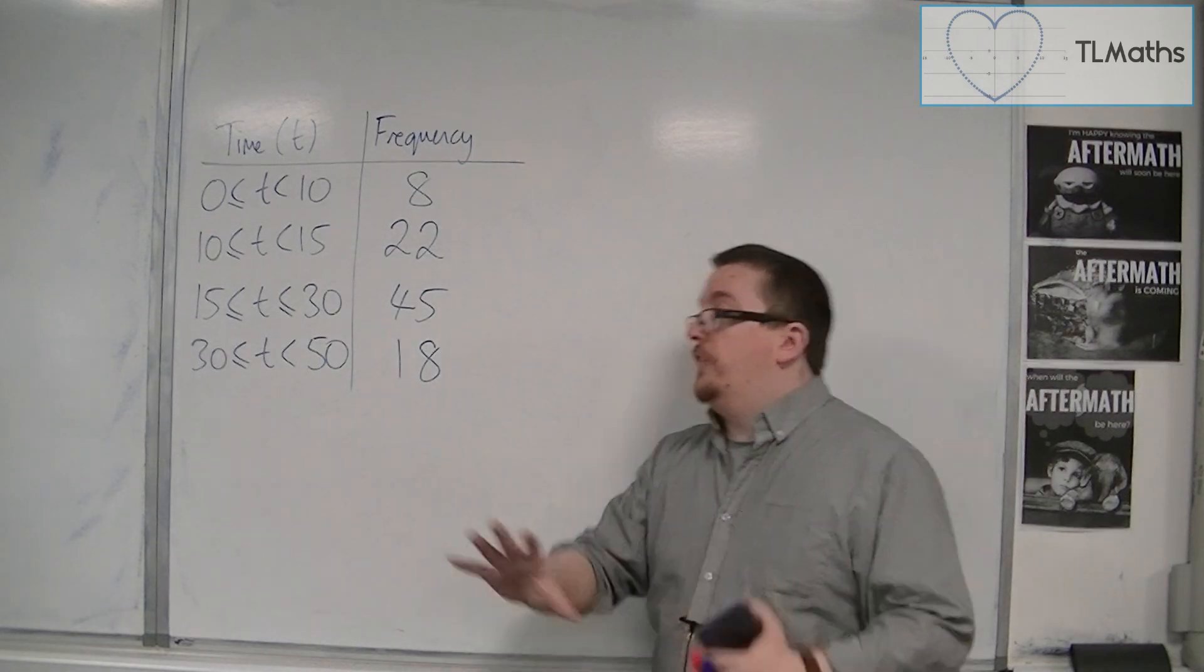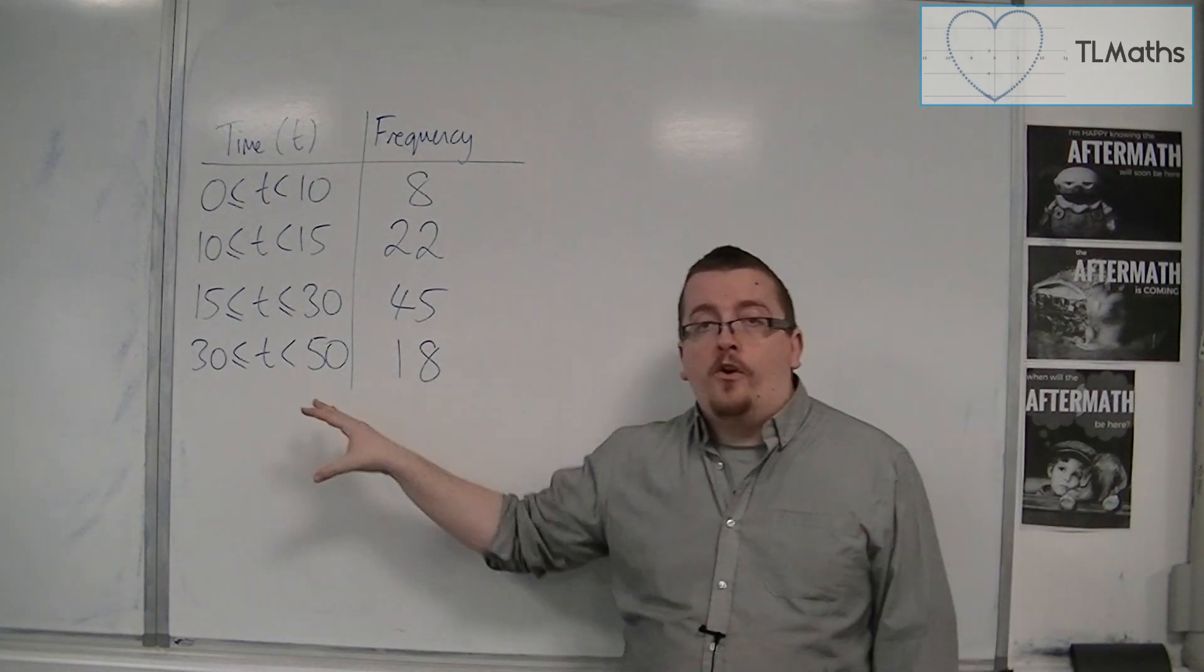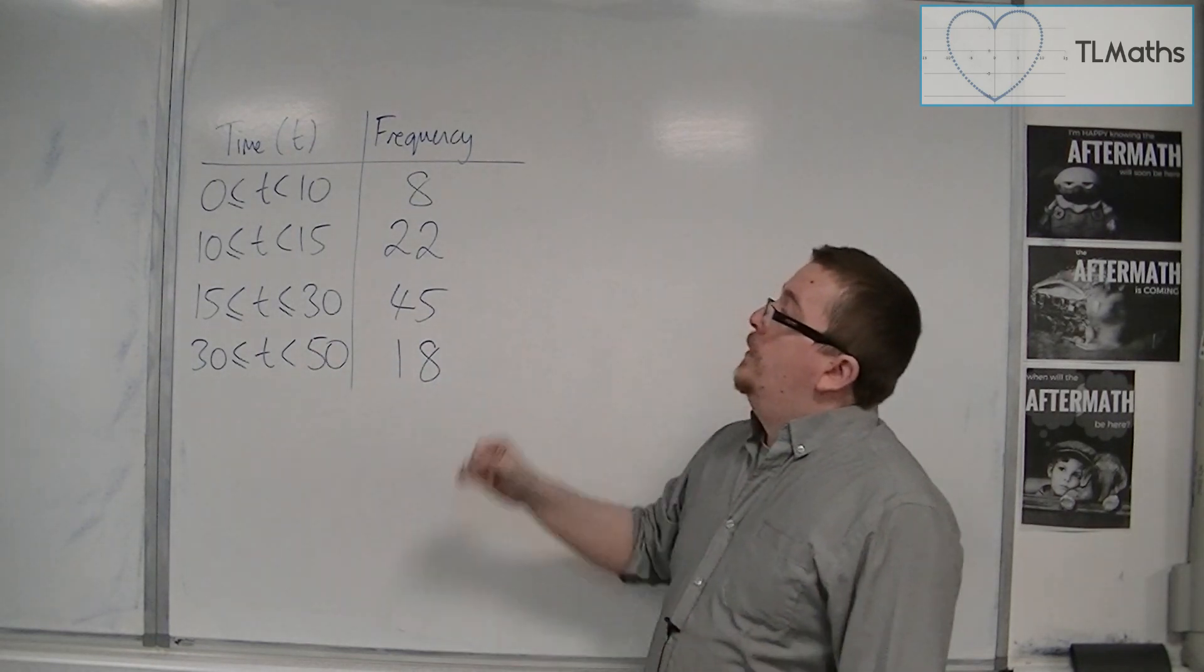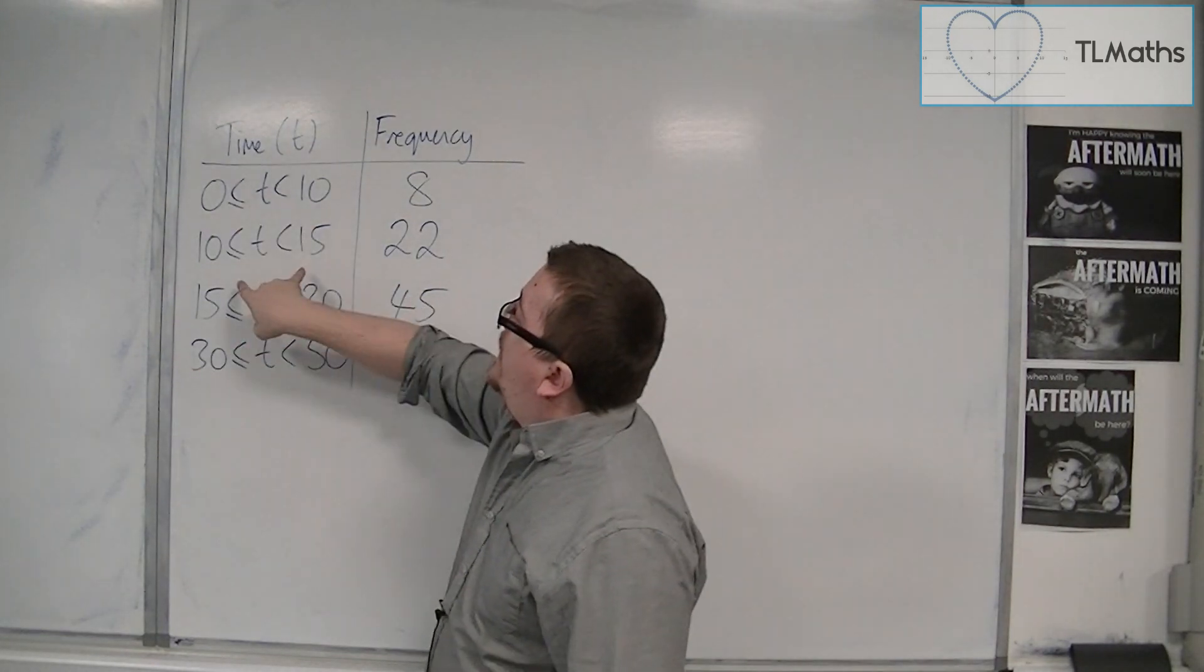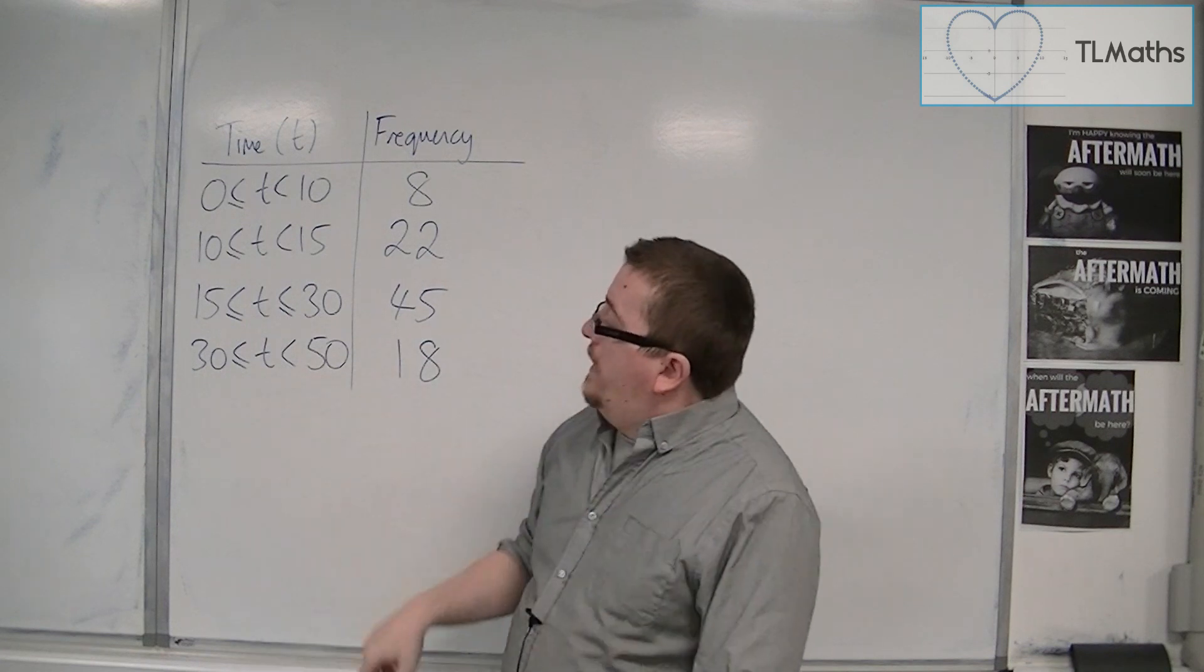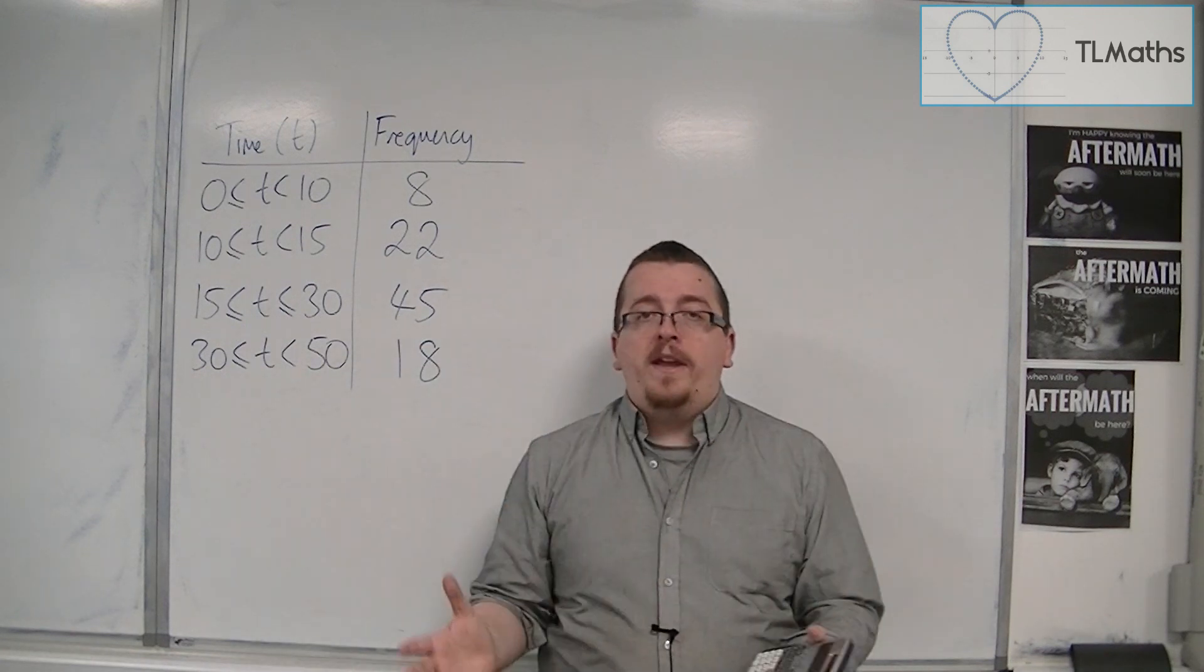Now, in this example, the bars are not the same width. We've got a gap of 10 here, a gap of 5, a gap of 15, and a gap of 20. This is still a histogram.